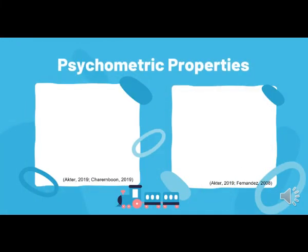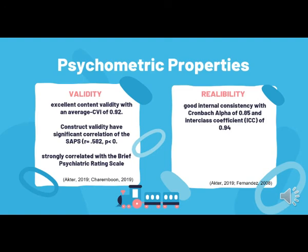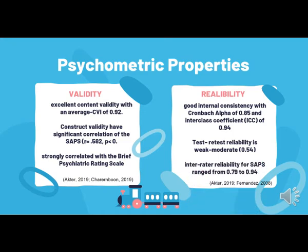Regarding psychometric properties, SAPS has excellent content validity, good construct validity, and is strongly correlated with the Brief Psychiatric Rating Scale. For reliability, SAPS has good internal consistency, weak to moderate test-retest reliability, and good inter-rater reliability.